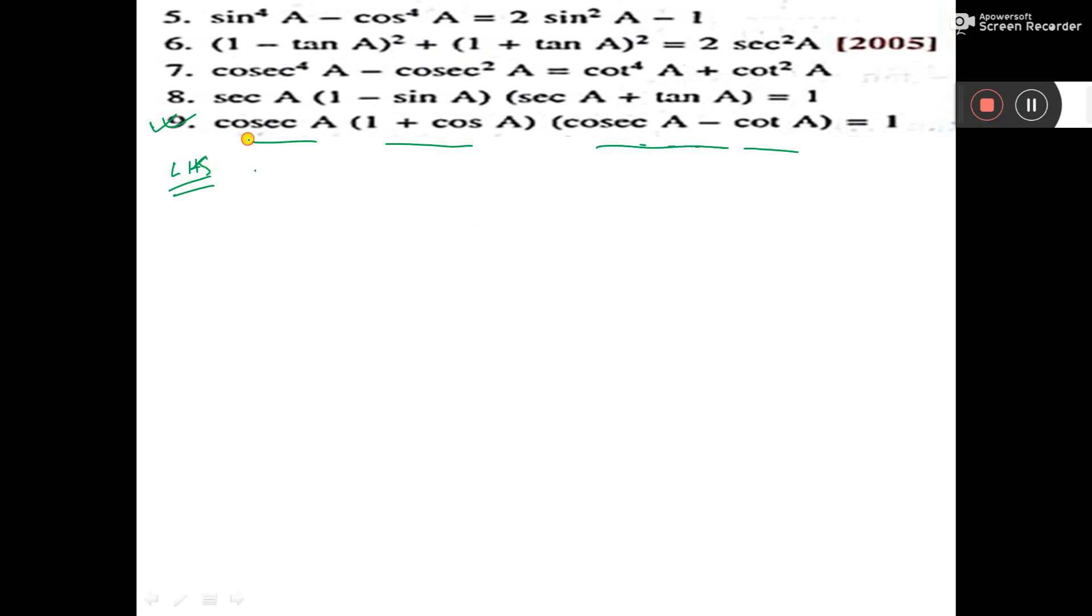So I am multiplying cosec A with this. So it will be cosec A plus cosec A into cosec A.